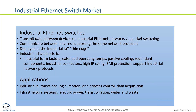Industrial Ethernet Switches in particular are used to transmit data between devices on Industrial Ethernet wireline networks via packet switching technology. They essentially communicate between devices supporting the same network protocols, whereas gateways are often used to communicate between devices supporting different protocols. In the tiering of the Industrial IoT Edge, Industrial Ethernet Switches are typically deployed at the thin edge or connectivity layer.